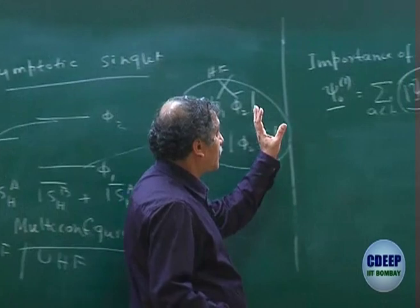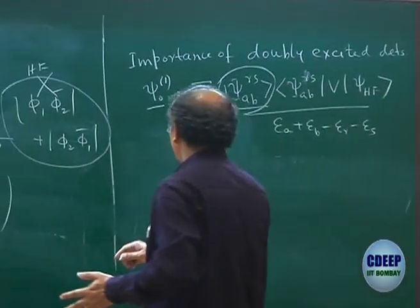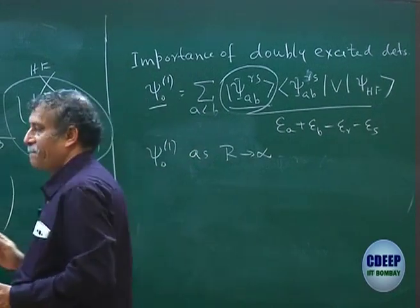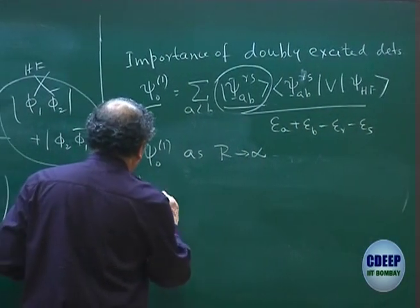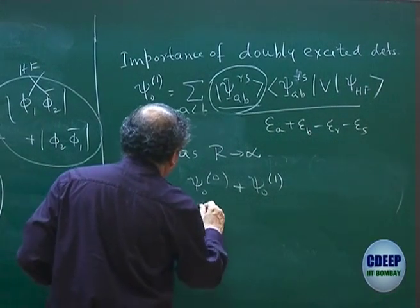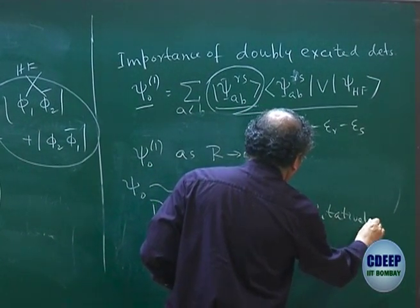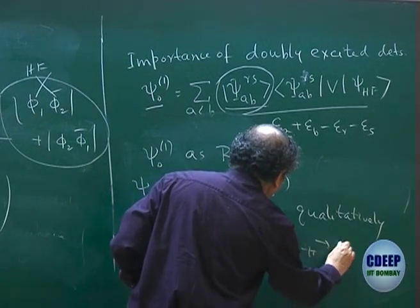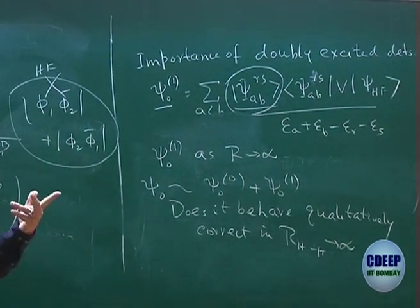To rigorously learn how diagrams come from the algebra, you should also learn second quantization, which we will also do later. But next class I will introduce the diagrams in an ad hoc manner. Diagrams are very pictorial, so all of you will understand easily — there is no algebra as such; the mathematics is written in terms of diagrams. Whatever we wrote as E naught 2 is represented as a diagram, and after that we will go to CI.